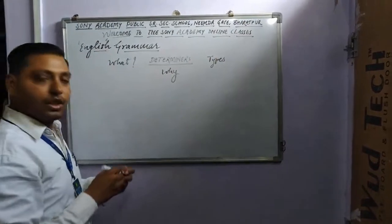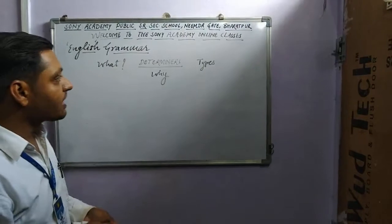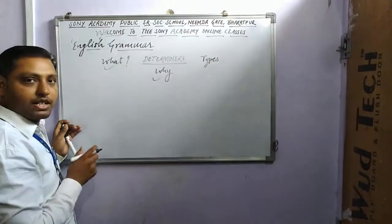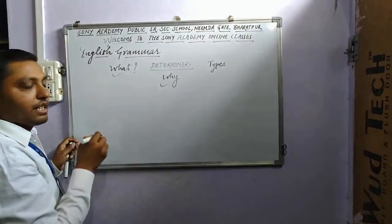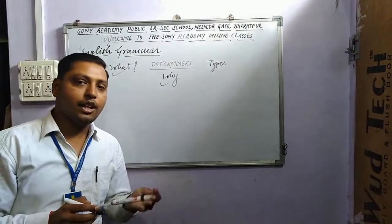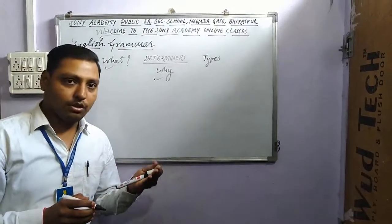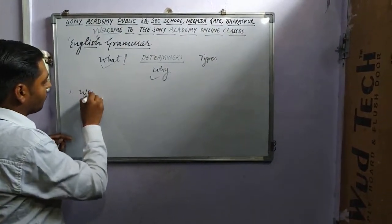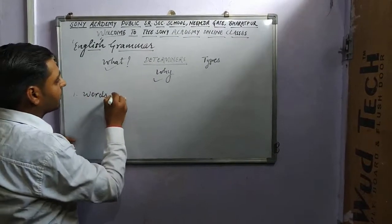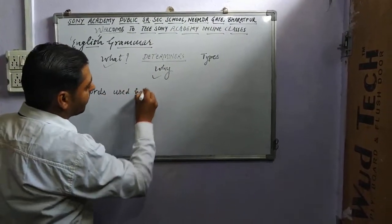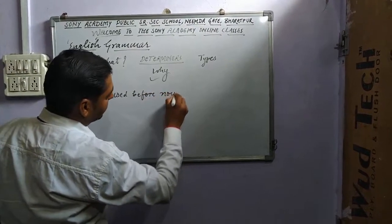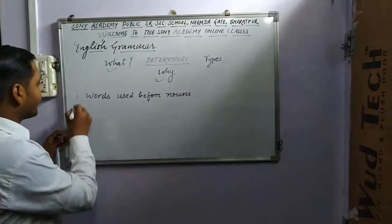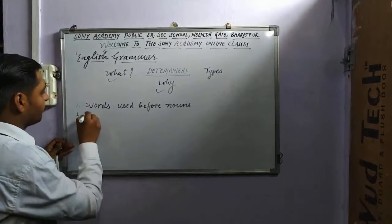So let's get started. First of all, the question is: what are determiners? There are actually four key points to keep in mind. First, determiners are words used before nouns — they are always used before nouns. Second, they introduce nouns.